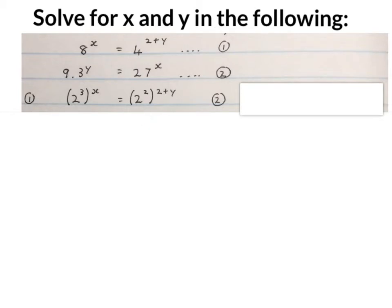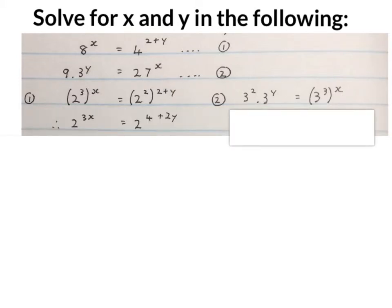Then I multiply the 3 with the X, and the 2 with the 2 and with the Y. That 9 became 3², the 3 stays, and 27 I made 3³. So 3 times X becomes 3X, 2 times 2 becomes 4, and 2 times Y becomes 2Y. Over here, the bases are the same and I'm multiplying, so I add the exponents.